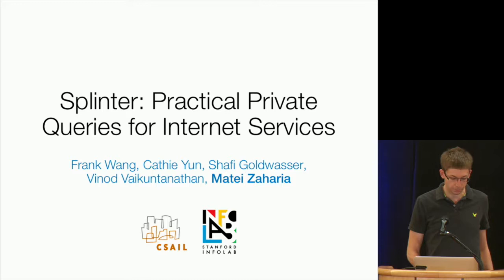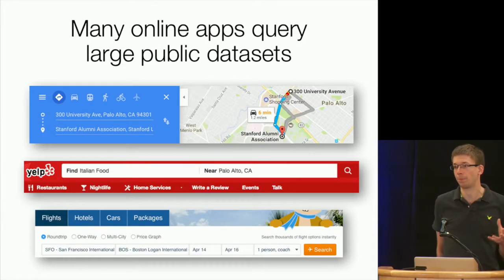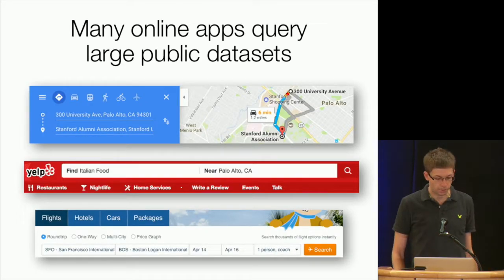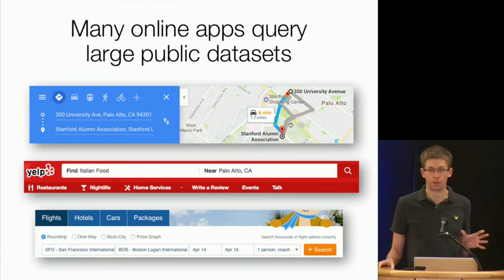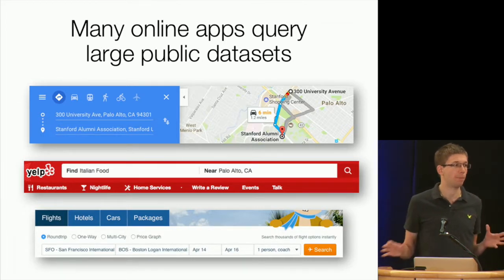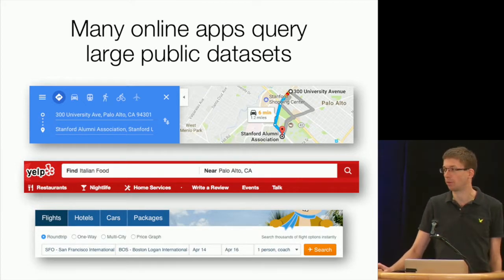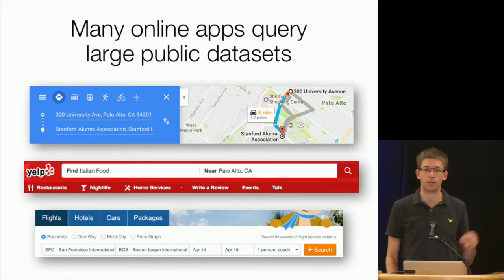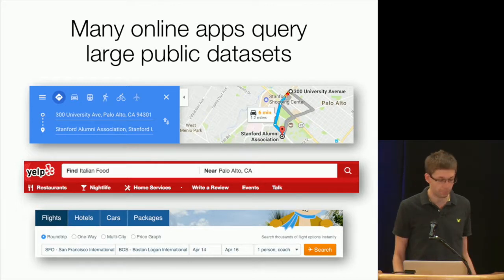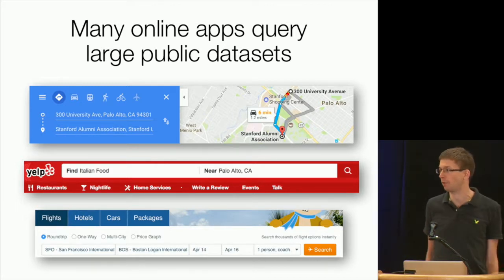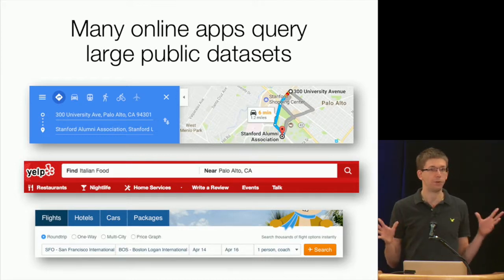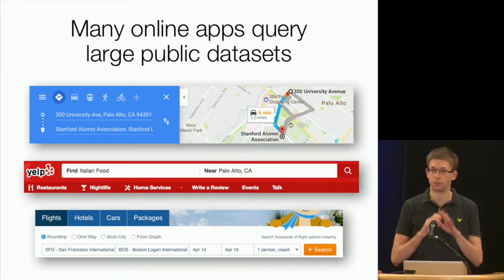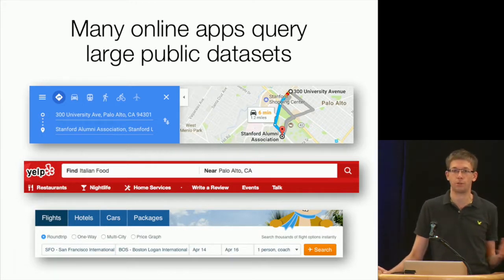So what's the background in Splinter? If you look at how people use the internet, a lot of the most common things you do are just querying large public data sets. For example, you're looking for directions on a map, maybe you need to get here this morning and you put in a start and end into Google Maps. You're looking for food, maybe you want to have dinner tonight in Palo Alto. Or you're planning travel and you have some dates when you want to fly somewhere. In all these cases, the data set is just some large data set out there, and you're mainly using this third party service to query it quickly.